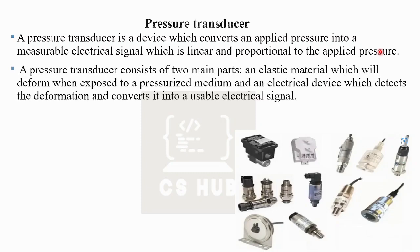The pressure transducer consists of two main parts: first, an elastic material which will deform when exposed to a pressurized medium, and second, an electrical device which detects the deformation and converts it into a usable electrical signal. We use the strain gauge.